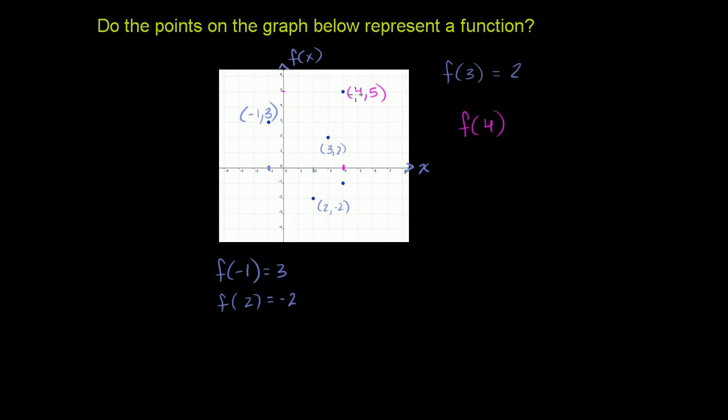So that says, if you give me a 4, I'll give you a 5. But it also says, if you give me a 4, I could also give you a -1, because that's the point (4, -1).